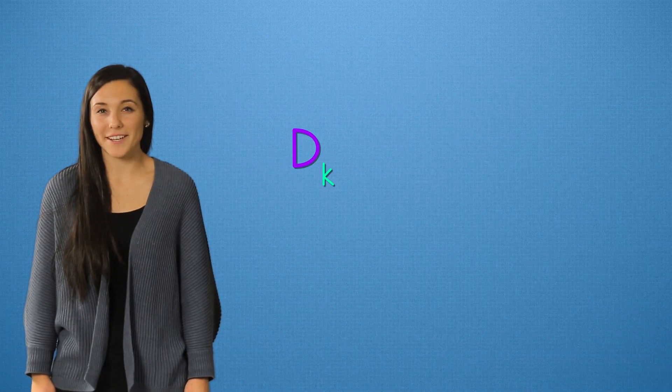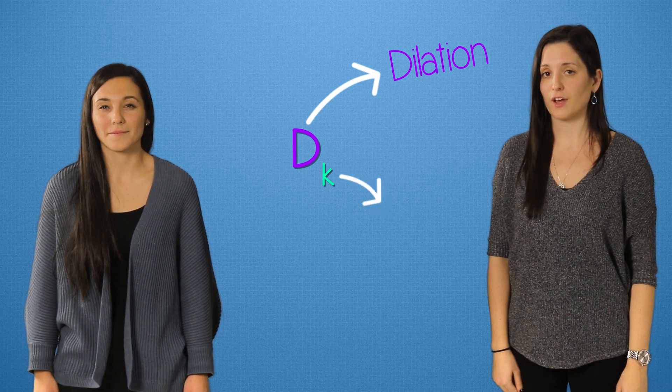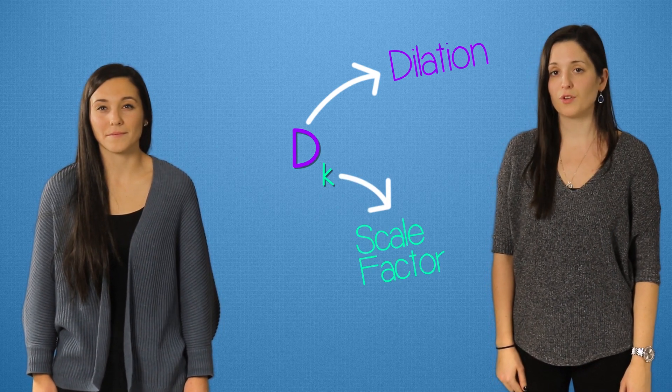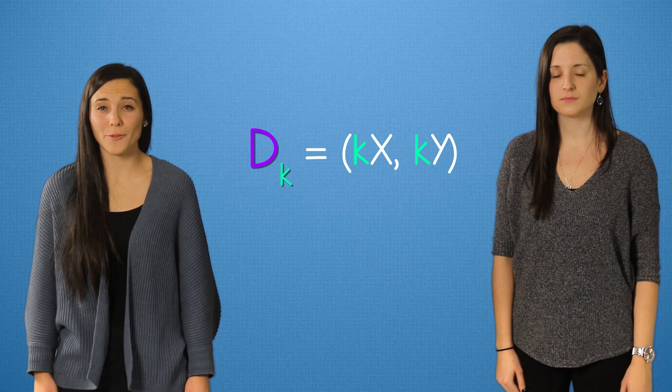The symbol is D for dilations. The number beside it is the scale factor. This means you are going to multiply your coordinates by this number. So here's the formula.